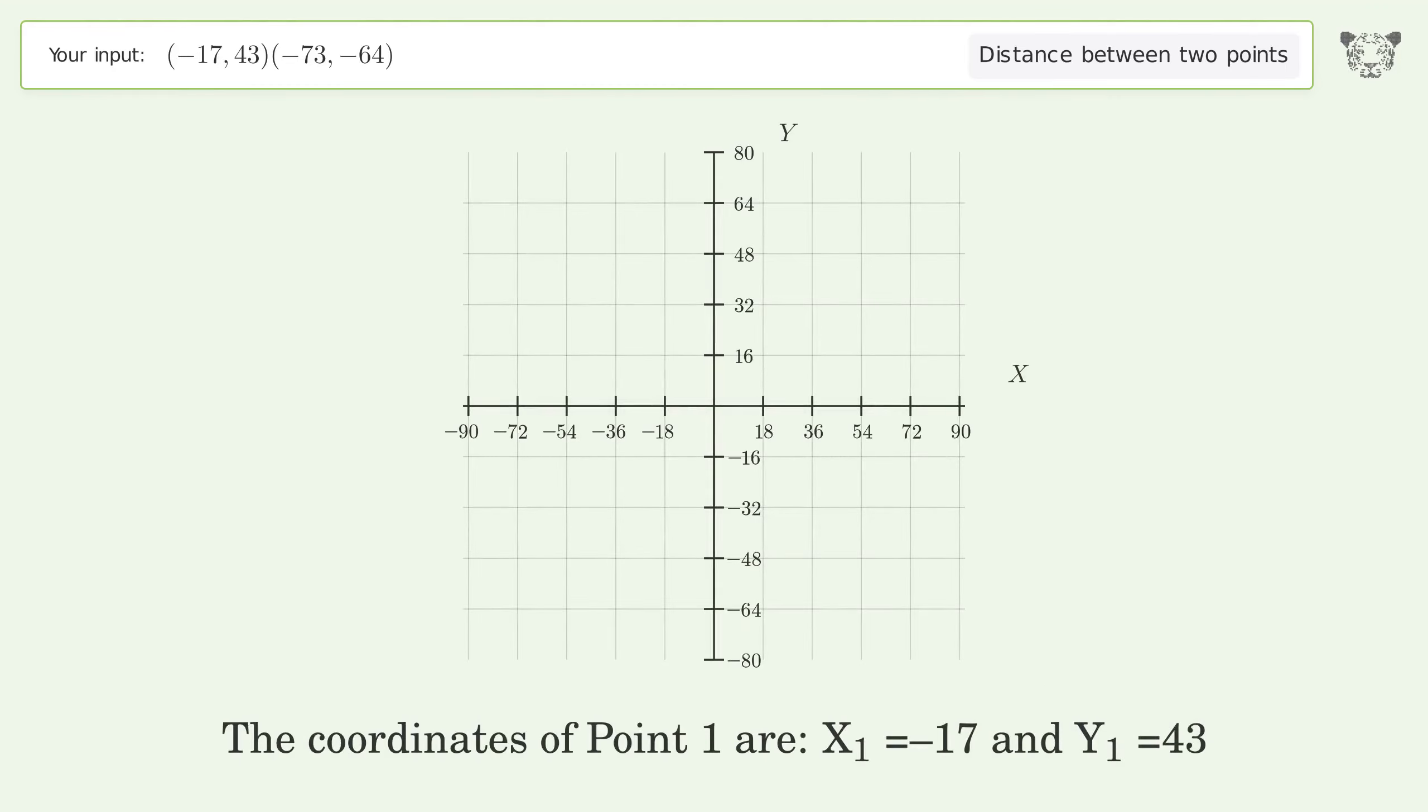The coordinates of point 1 are x1 equals negative 17 and y1 equals 43. The coordinates of point 2 are x2 equals negative 73 and y2 equals negative 64.